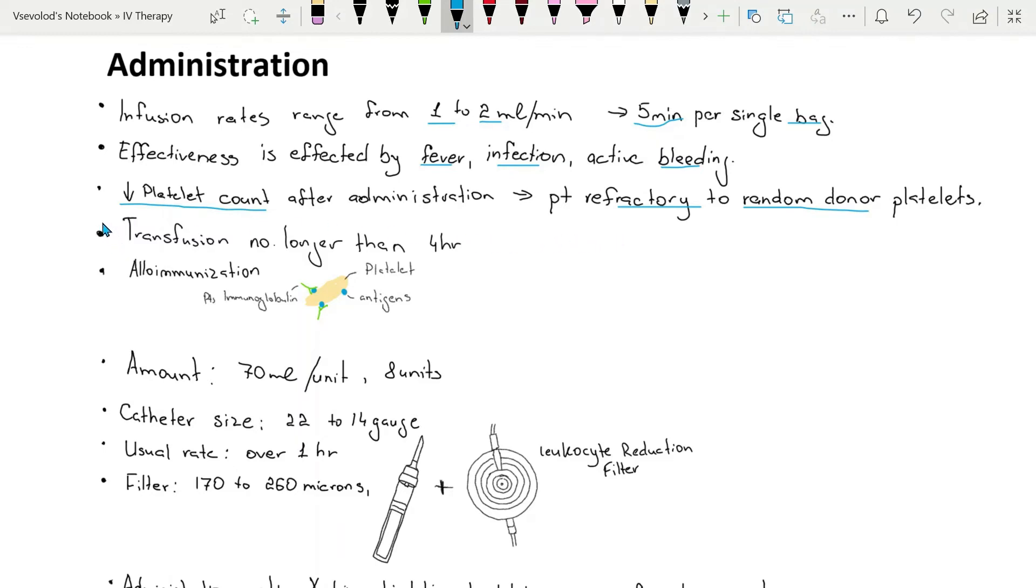Platelet concentrates may be pooled before administration or infused individually. After they are pooled, platelets should be transfused within 4 hours.